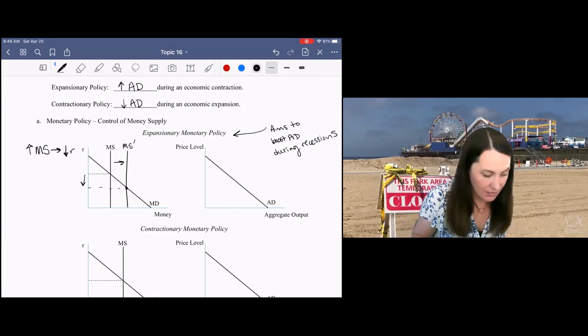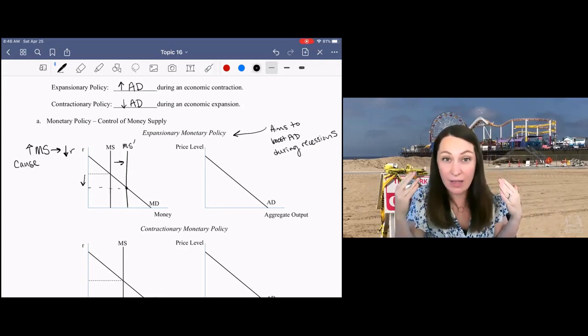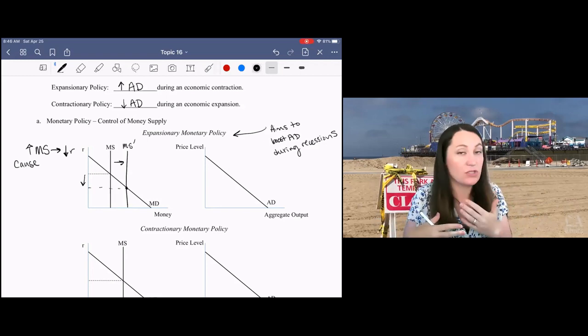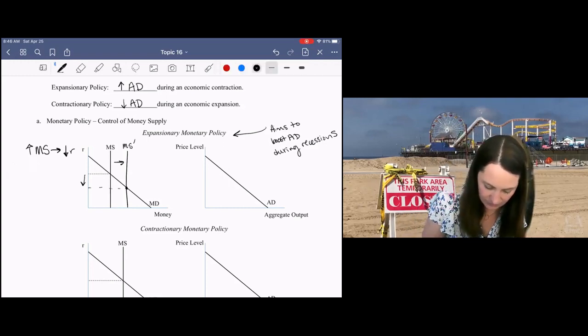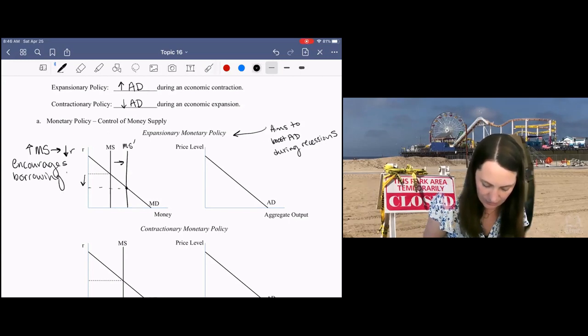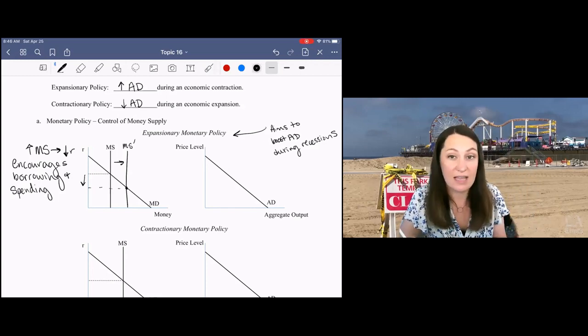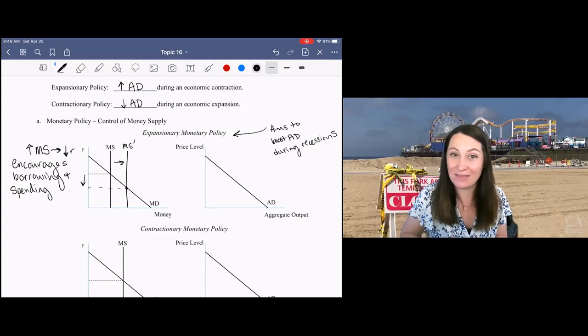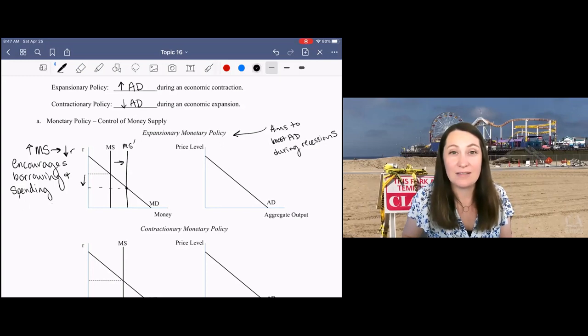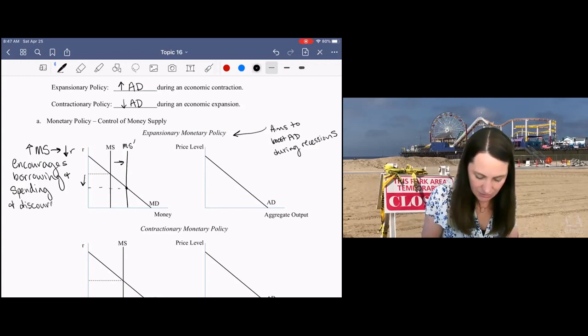We've got this decrease in interest rate. Remember, back to your loanable funds market - a decrease in interest rates is going to encourage borrowing and spending, because you're thinking about either you got some money, you want to spend it or save it. If the interest rate is really high, you have a bigger incentive to save your money. If the interest rate is lower, you have less of an incentive to save your money, and you might just spend it today. The lower interest rate is going to encourage borrowing and spending and discourage saving.